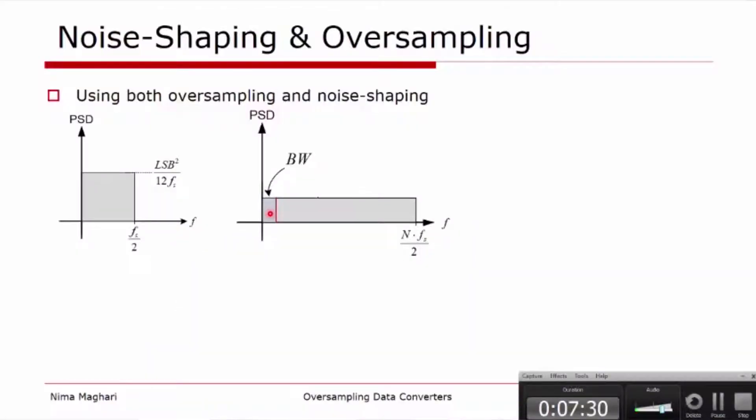But this is not extremely beneficial because every time we double the oversampling ratio we only get 3 dB improvement in signal-to-noise ratio.